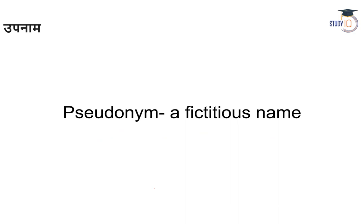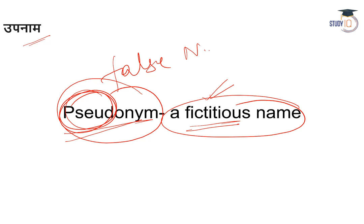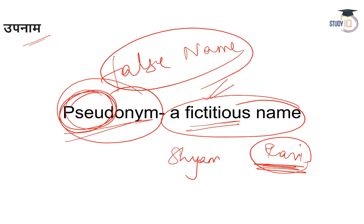The third word is pseudonym. Pseudonym shabd ka arth hota hai — ek aisa naam jo aap le rahe ho jo aap ka naam nahi hai. A fictitious name ke liye hum pseudonym shabd ka prayog karte hain. 'Pseudo' ka arth hota hai 'false', so pseudonym means false name — aap ka pen name ya fictitious name. Jaise aap ka naam Sham hai lekin aap ne apni rachna mein naam Ravi likh diya, toh Ravi aap ka pseudonym ho jayega.